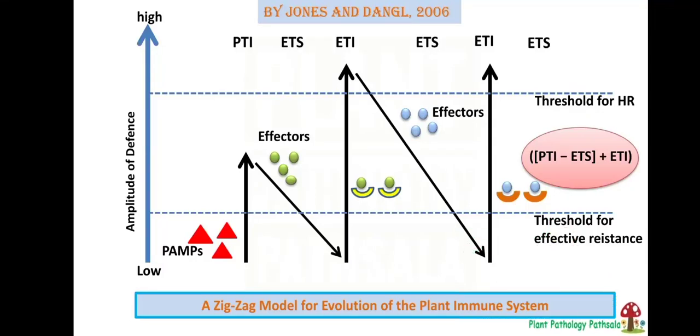In this picture, you can see a zigzag model for the evolution of the plant immune system given by John Centangle in 2006.